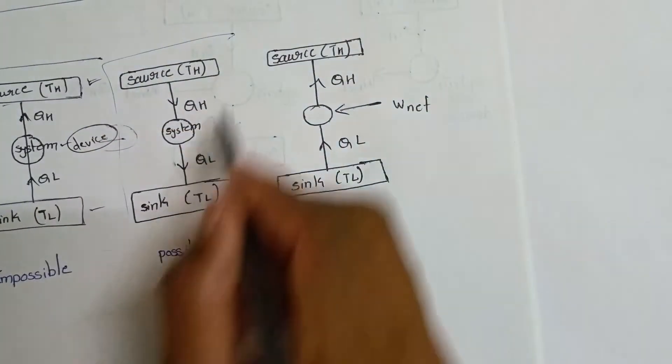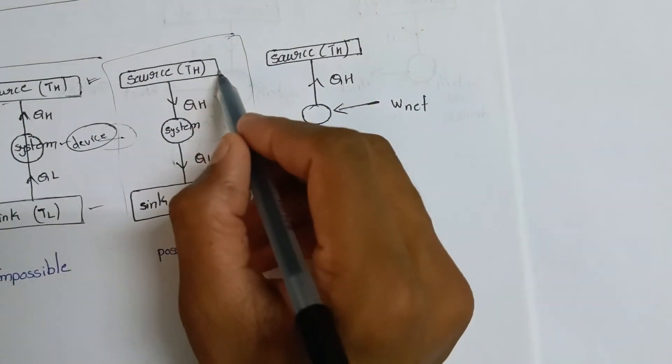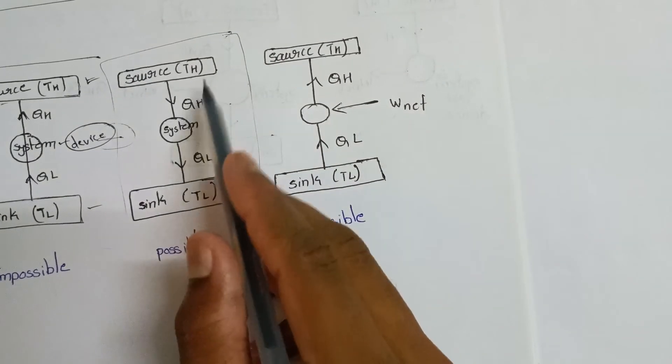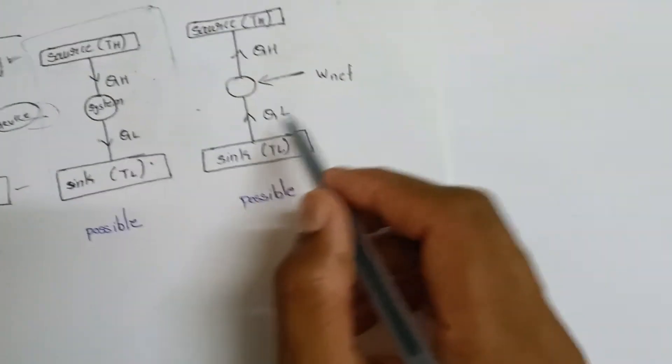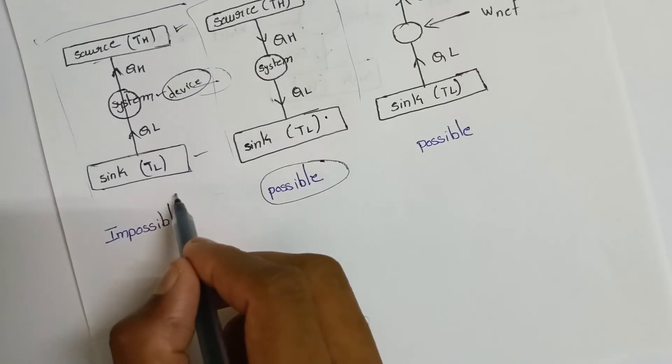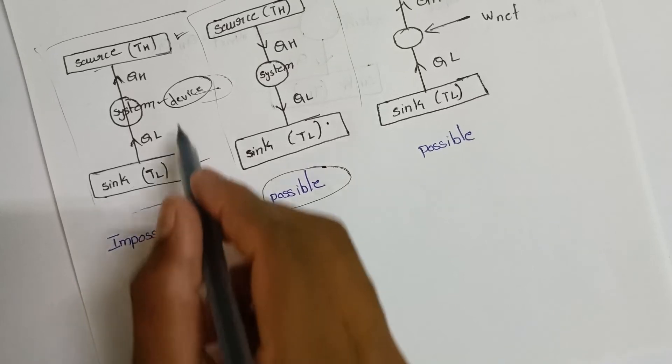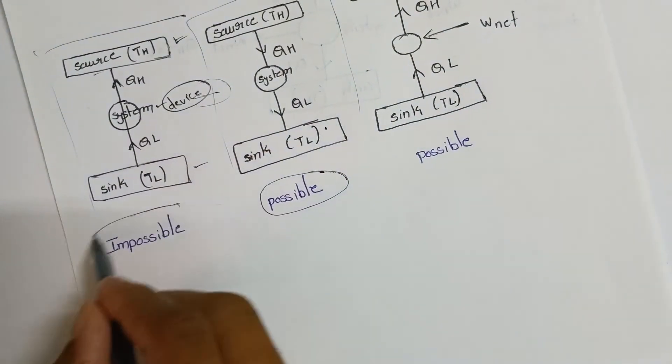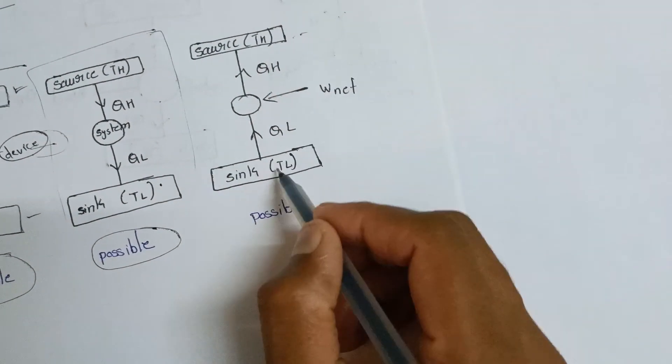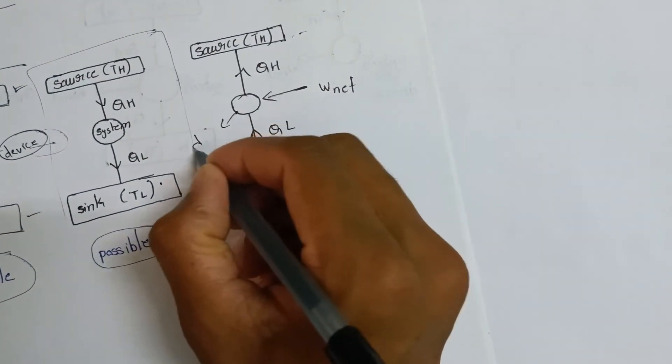Here is the heat engine: high temperature to low temperature with work output is possible. But without external work input, low to high is impossible. In the diagram, with device work input, heat transfers from sink to source.